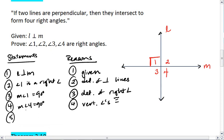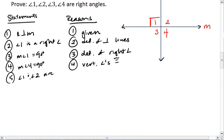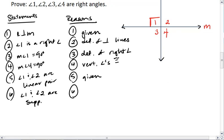So we know that angle 1 and angle 2 are supplementary. Or actually, they're a linear pair. And that's given in the picture. So then angle 1 and angle 2 are supplementary. And that is the definition of a linear pair, or the linear pair postulate.